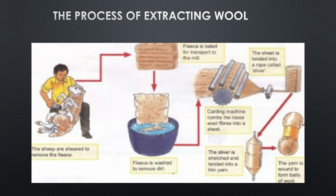The next step is scouring. This process involves washing the sheared wool thoroughly with soapy water to remove unwanted and greasy material. The wool is then dried and passed through rollers. The third step is sorting, where the wool is divided into sections and graded by quality. Wool of the same quality is processed together to obtain different types of textiles.